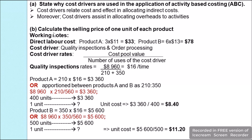In part (ii) of the question we are asked to calculate the selling price of one unit of each product. We will start with the working notes. The direct material cost per unit was already given. For direct labor: product A requires 3 labor hours at $11 per hour, so 3 × 11 = $33. For product B, 6 hours at $13 per hour, so 6 × 13 = $78.